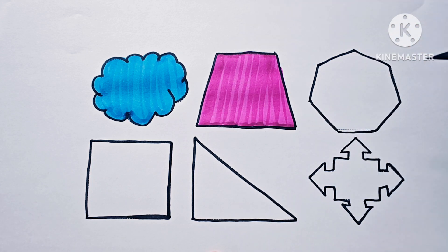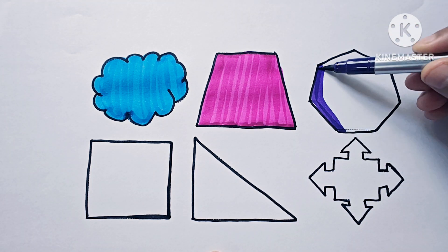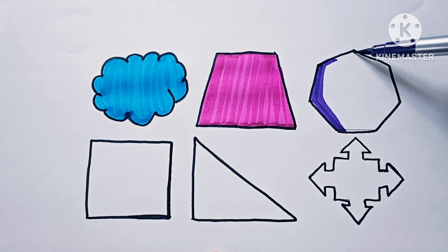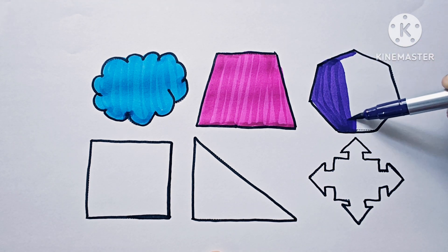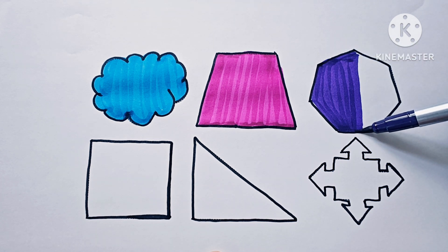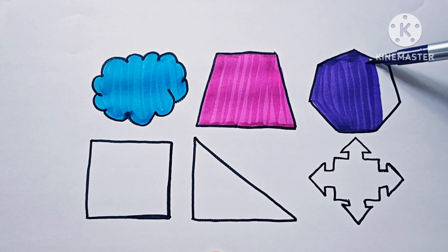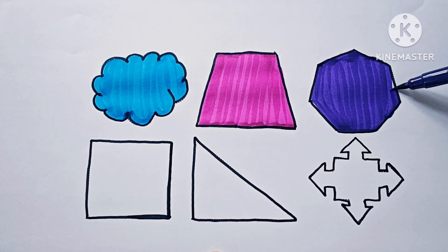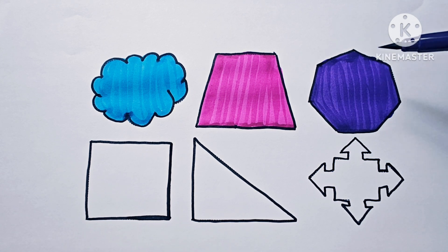This shape has seven sides. This is a heptagon. It has seven sides. The color is purple — heptagon, purple color.